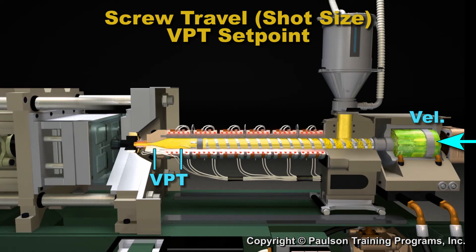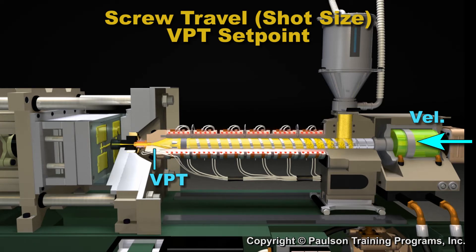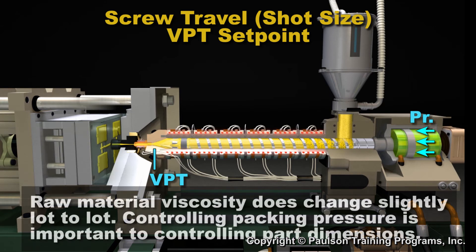During injection, when the screw has traveled the distance set as the VPT point, the control system switches to Pressure Control to start the packing phase. Note that the raw material viscosity does change slightly lot to lot. That's why controlling packing pressure is important to controlling part dimensions.